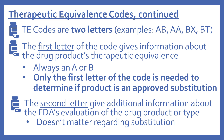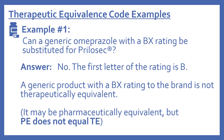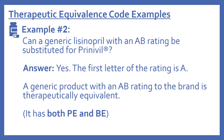Here are a few examples. Example one: can a generic omeprazole with a BX rating be substituted for Prilosec? The answer is no. The first letter of the rating is B, so a generic product with a BX rating to the brand is not therapeutically equivalent. It may be pharmaceutically equivalent, but pharmaceutical equivalence does not equal therapeutic equivalence. Example two: can a generic lisinopril with an AB rating be substituted for Prinivil? The answer is yes. The first letter of the rating is A, so a generic product with an AB rating to the brand is therapeutically equivalent — meaning it has both pharmaceutical equivalence and bioequivalence.